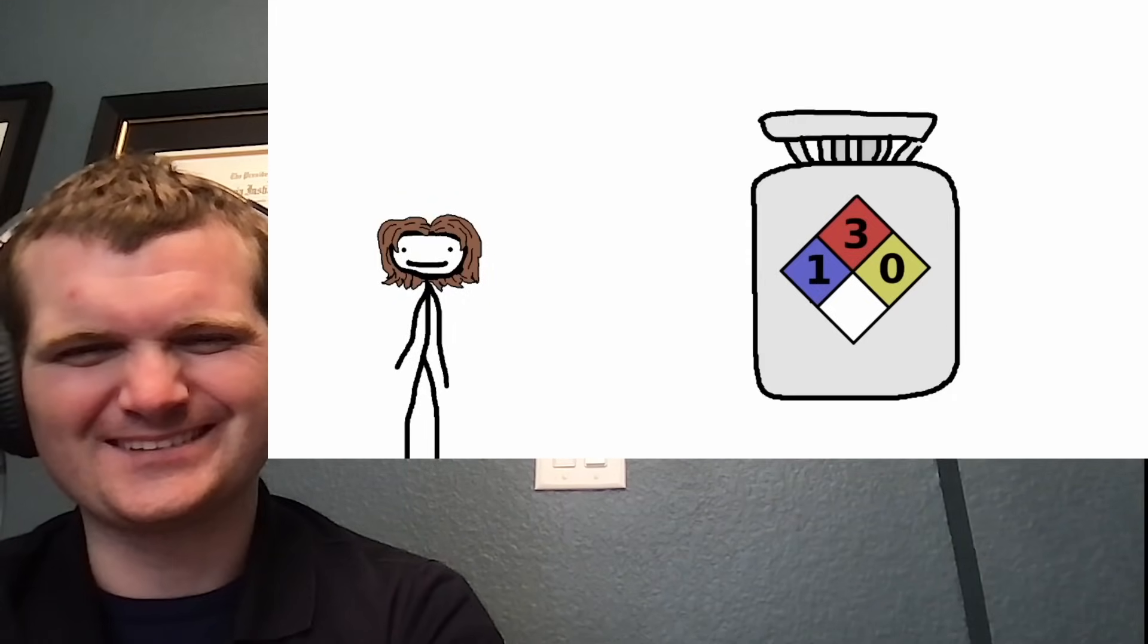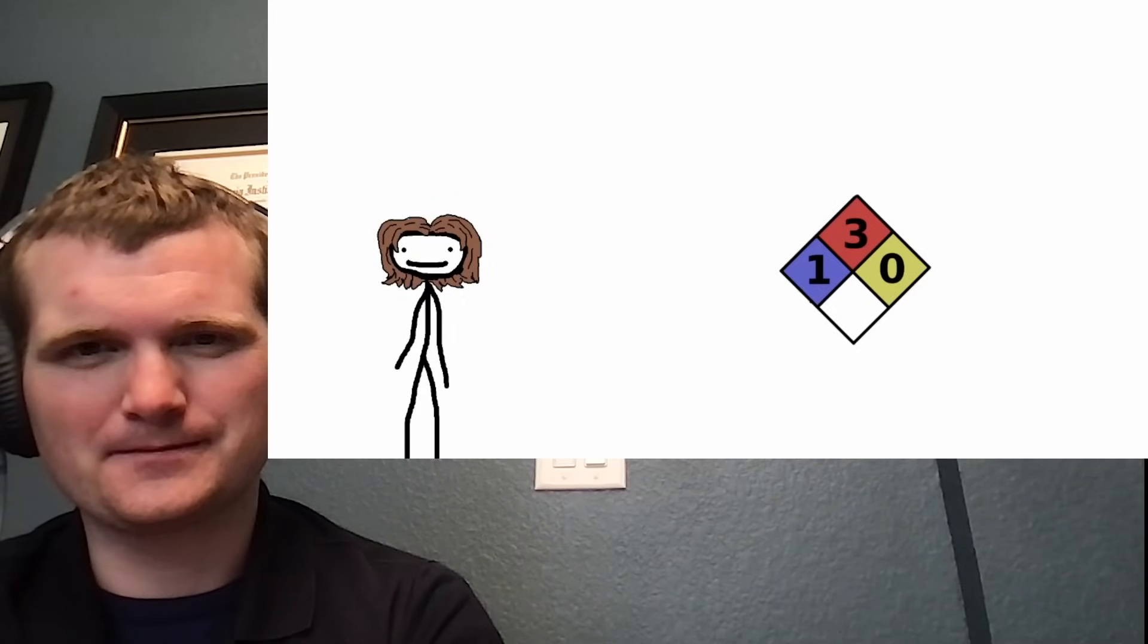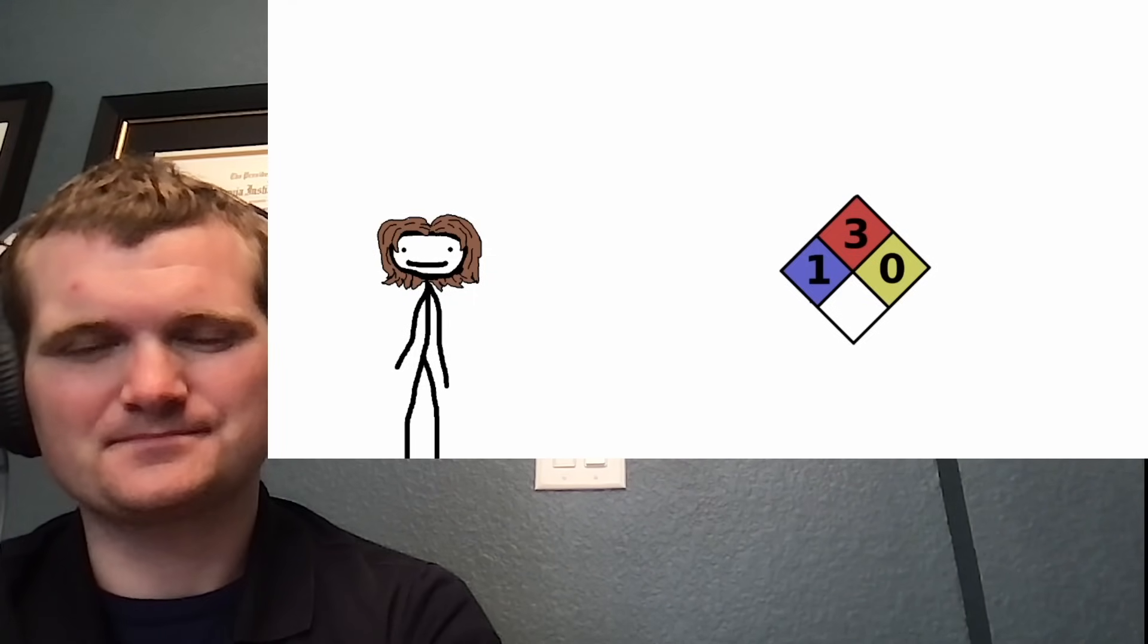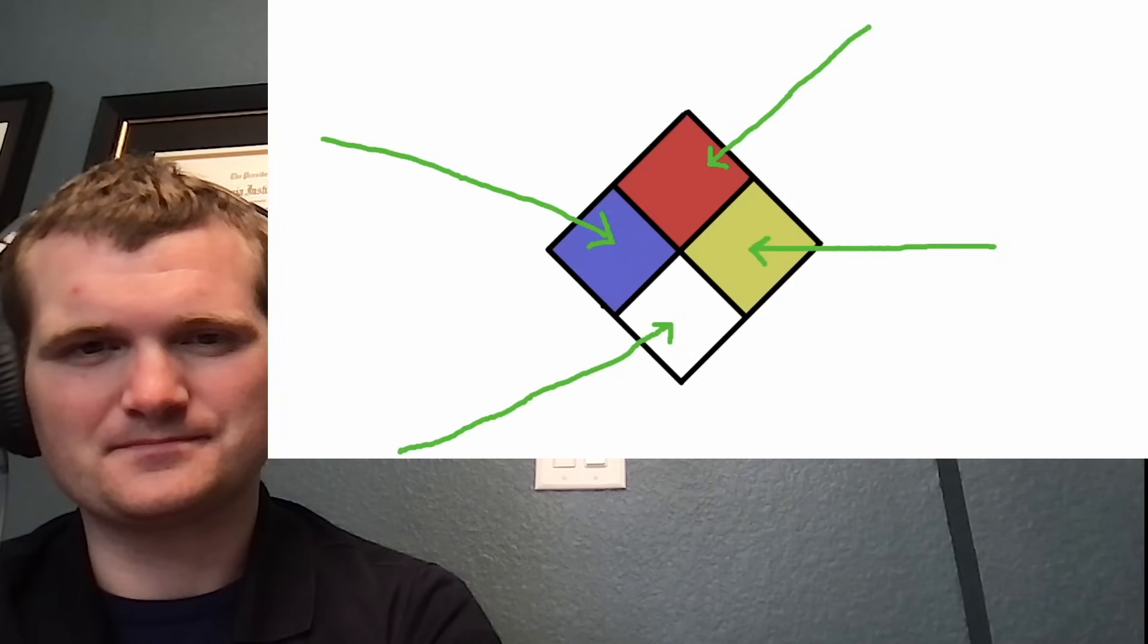Anyway, when you see the symbol, usually on the door or a container or something, it means there's a hazardous material present and the numbers and symbols on the diamond give information on exactly how dangerous that material is.